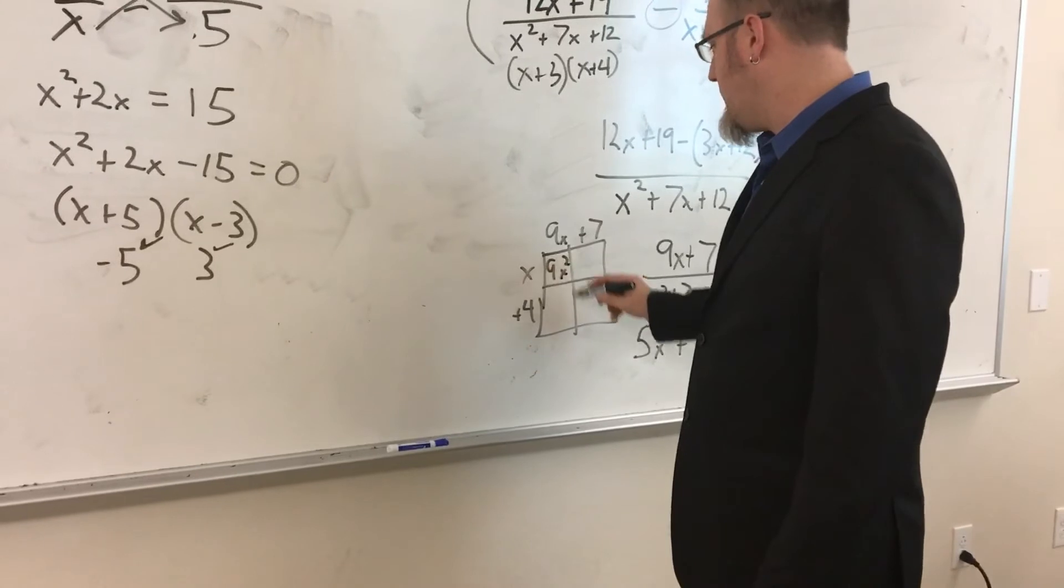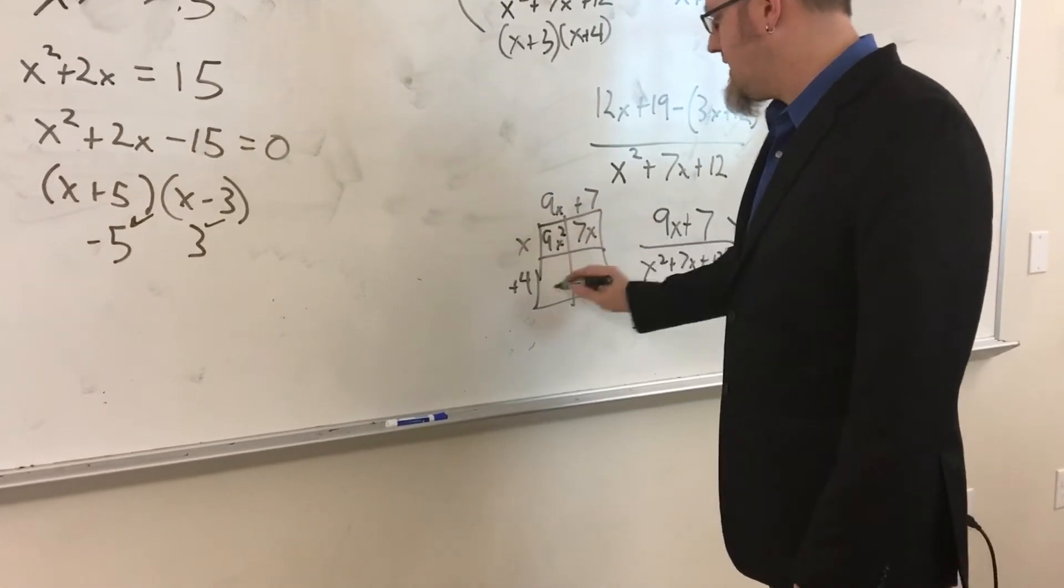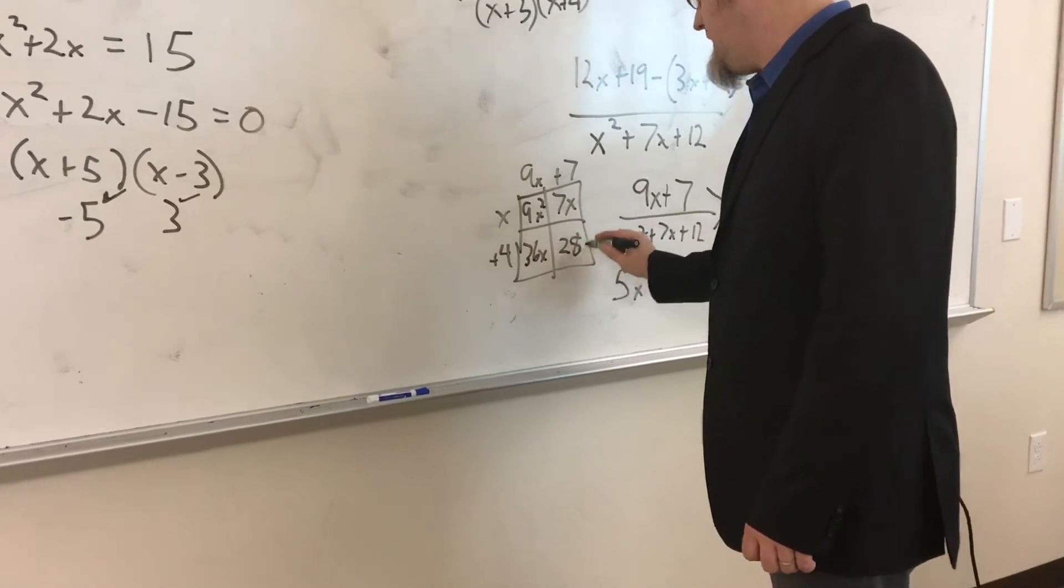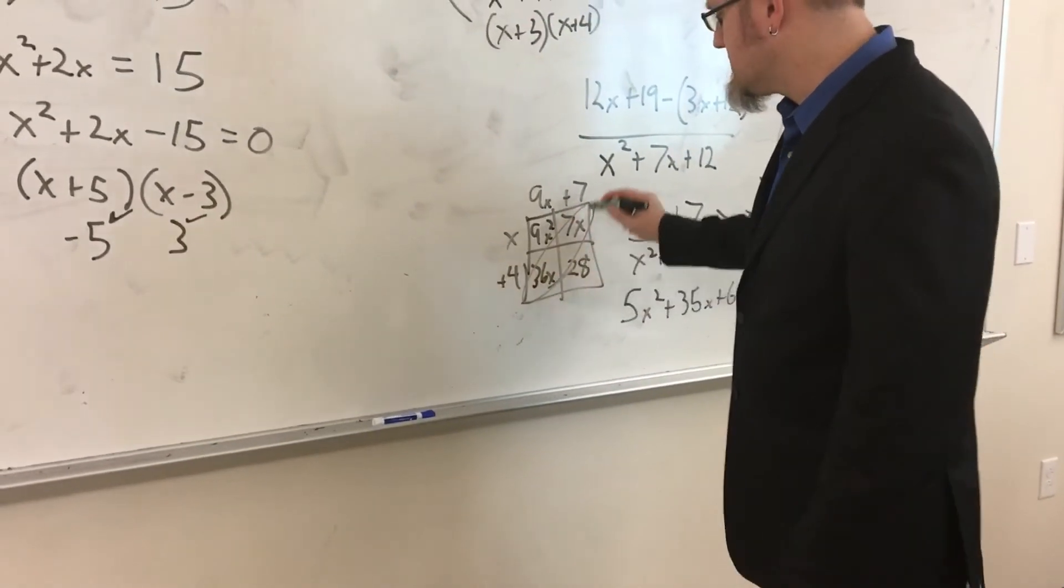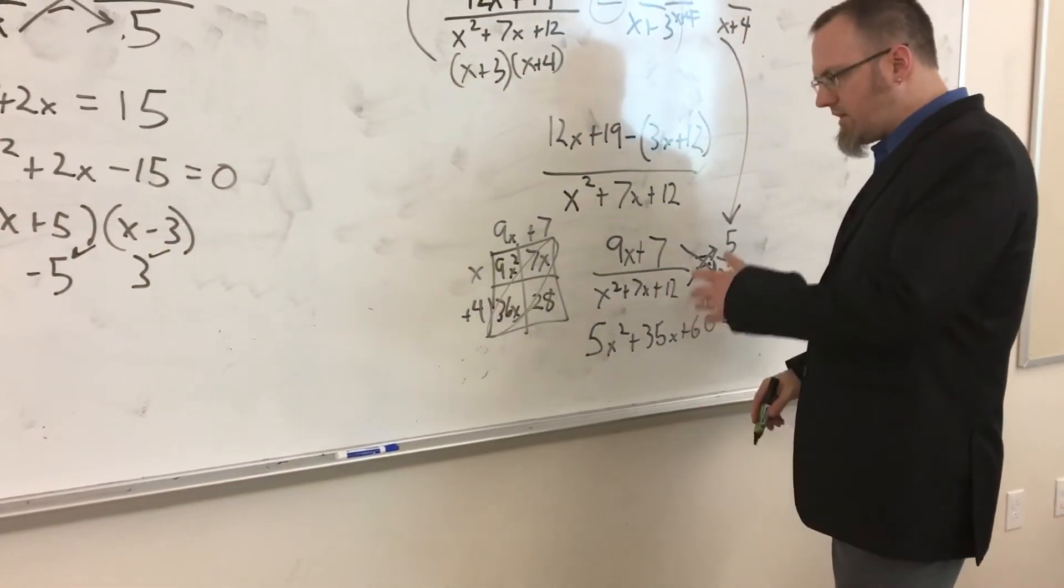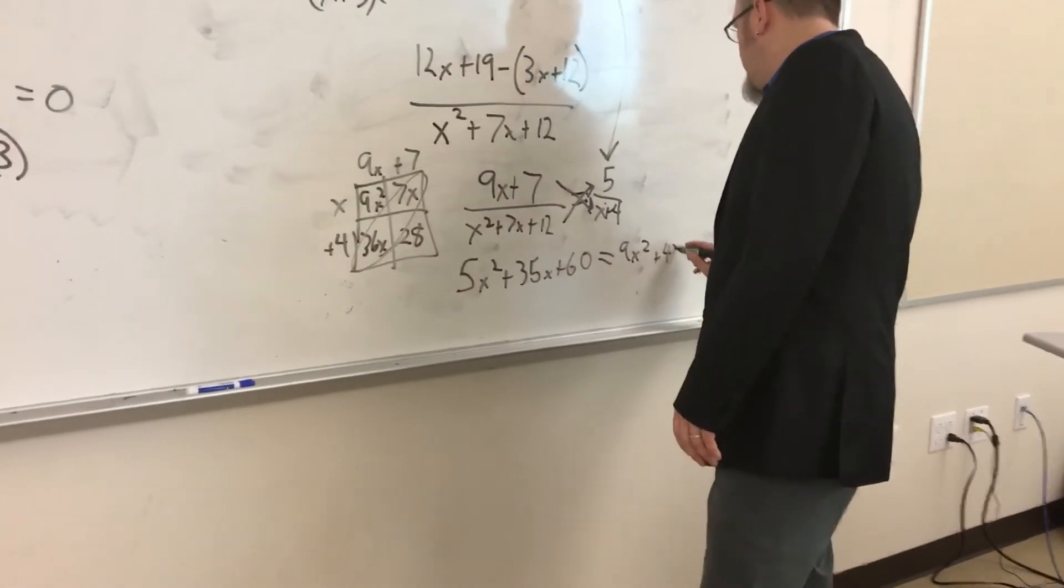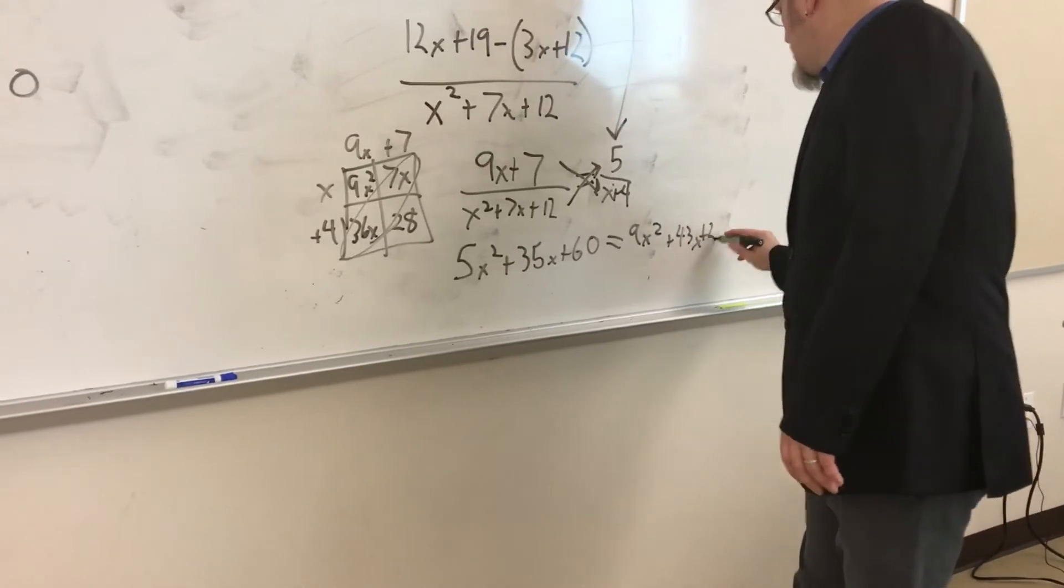That's 9x², 7x, 36x, and 28. These are like terms. So the 7x and the 36x are going to make 43x. So that's 9x²+43x+28.